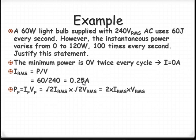Multiplied by I_RMS, which came from our RMS values up here, multiplied by V_RMS, which is given in the question. So we've got 2 times 240 times 0.25 amperes gives us a peak value of 120 watts, justifying the other half of that statement.